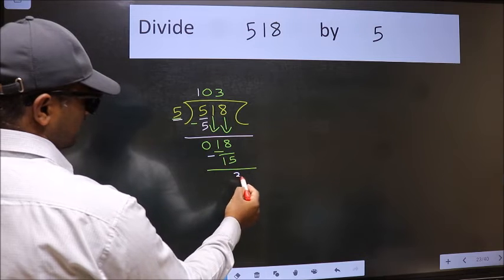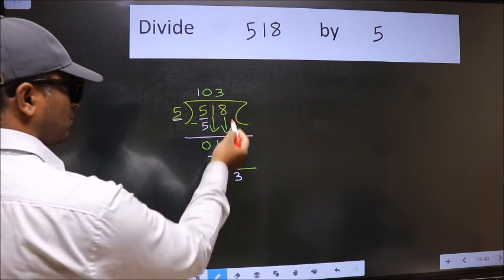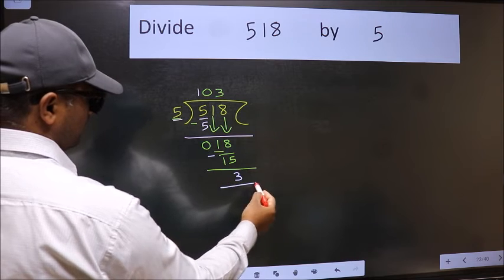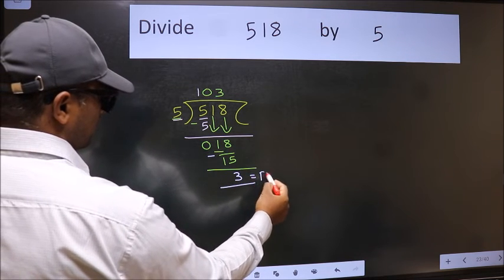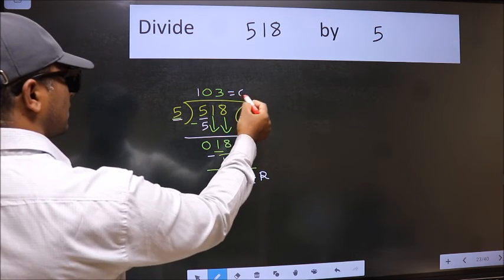We get 3. No more numbers to bring down, so we stop here. This is our remainder and this is our quotient.